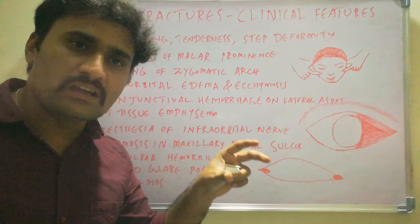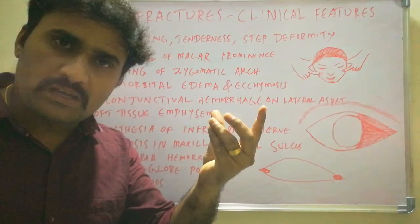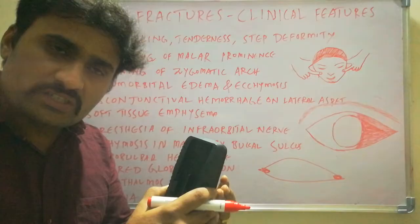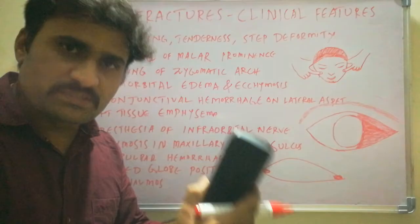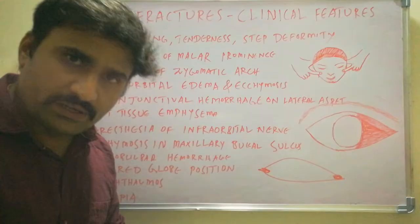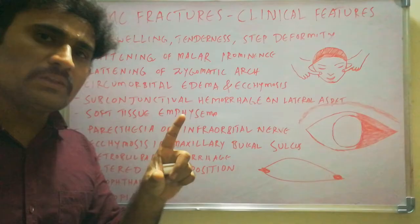Enophthalmos is the inward sinking of the eyeball, making the eyeball appear smaller. This is due to prolapse of orbital fat when there is an orbital floor fracture, or due to expansion of the bony orbit. When the ZMC complex is completely displaced inferiorly, medially, or laterally, the increased volume of the bony orbit results in enophthalmos.